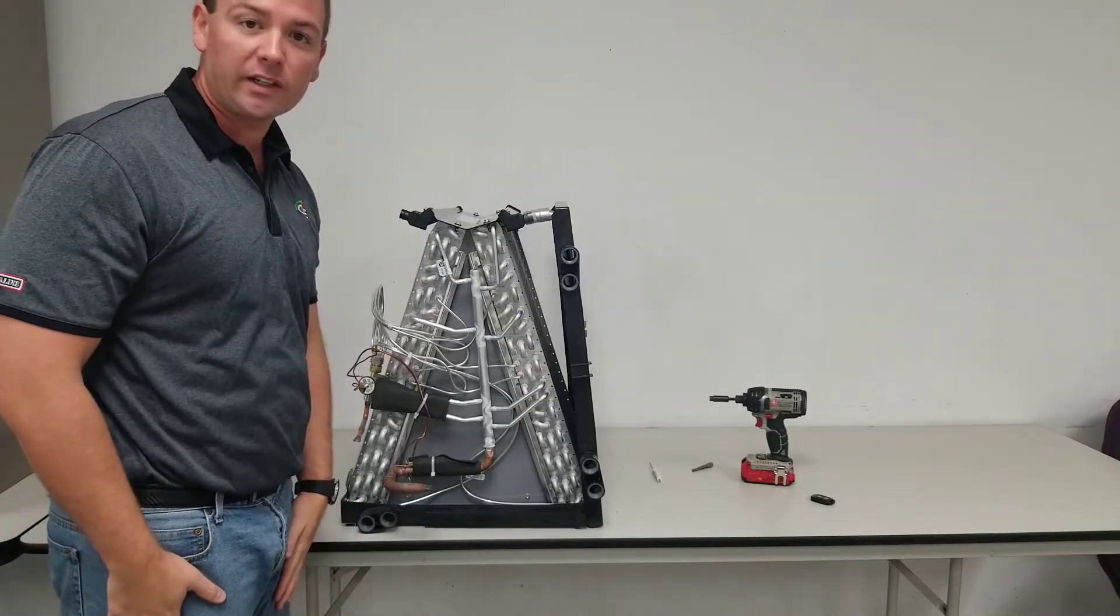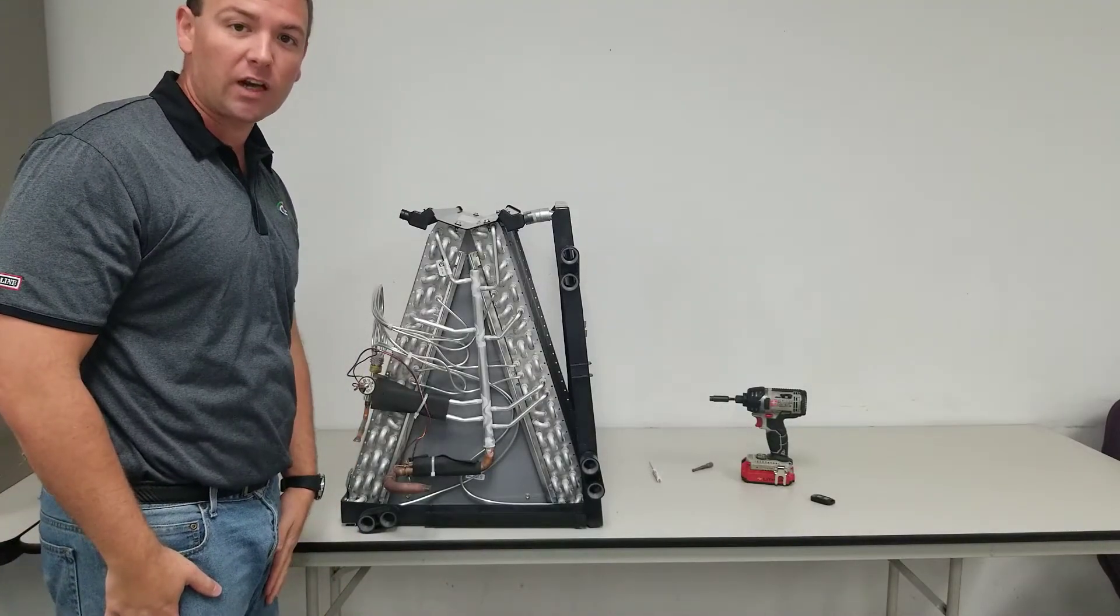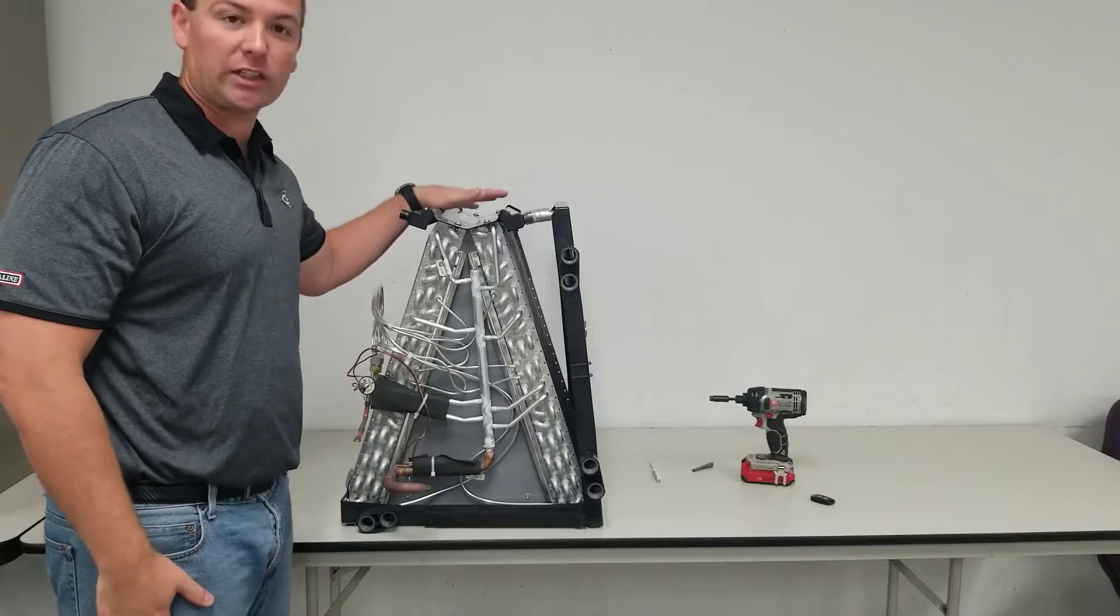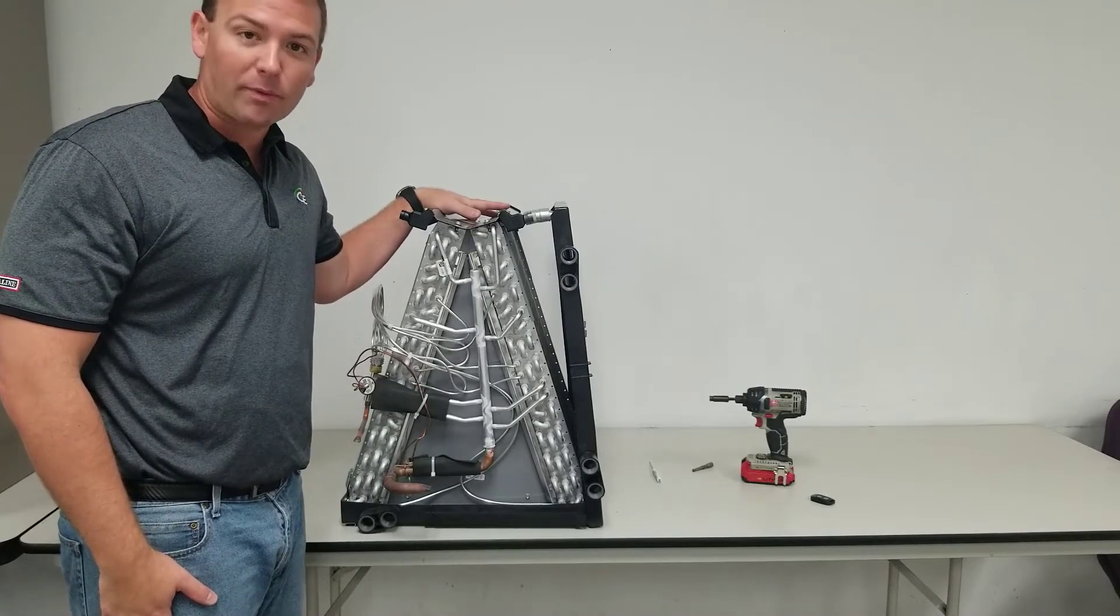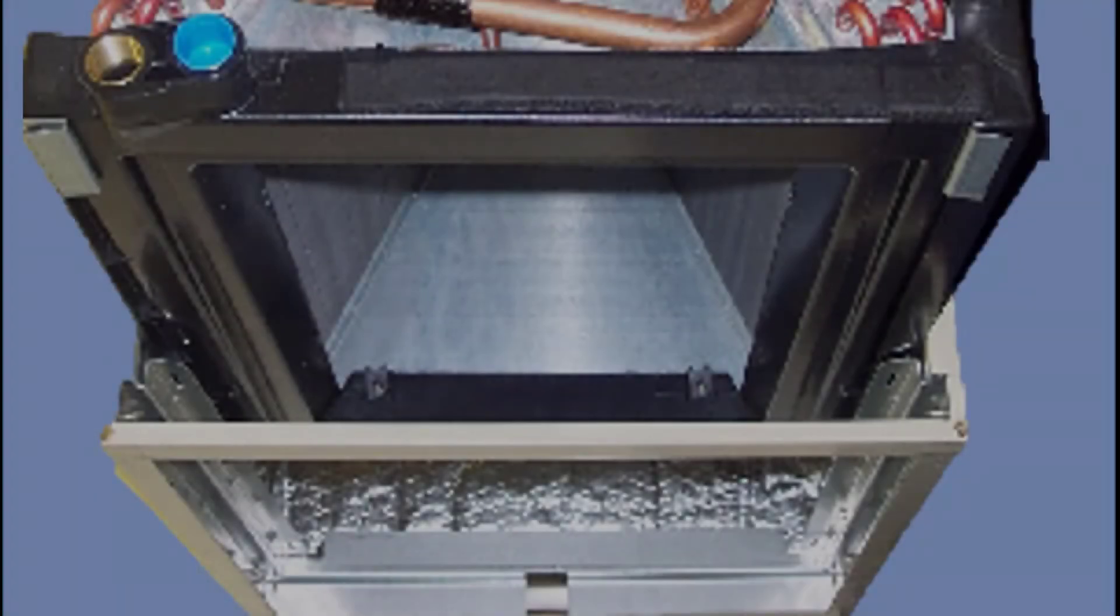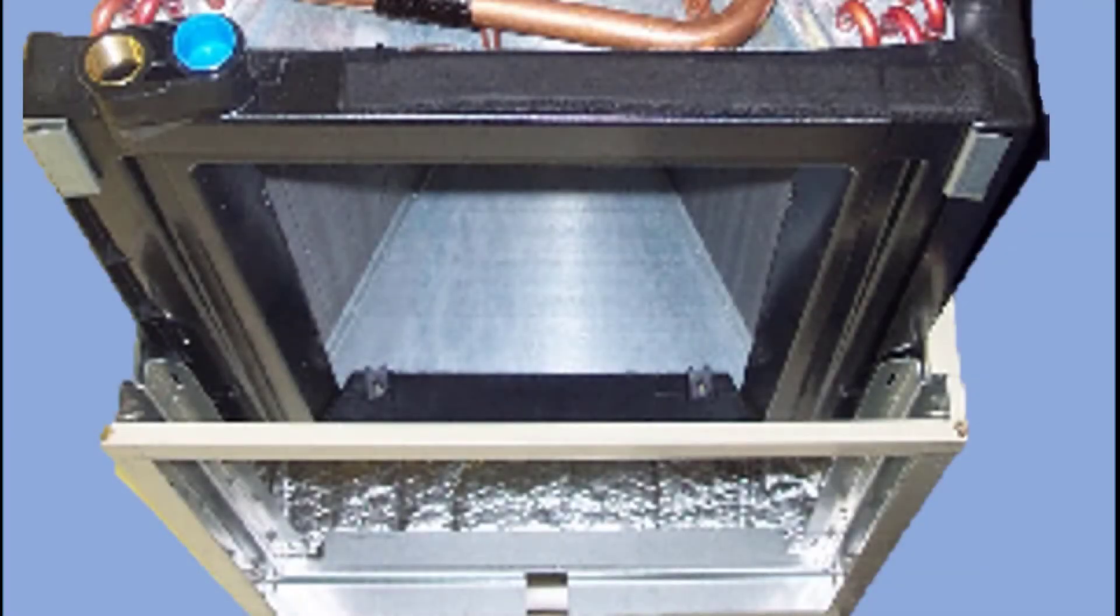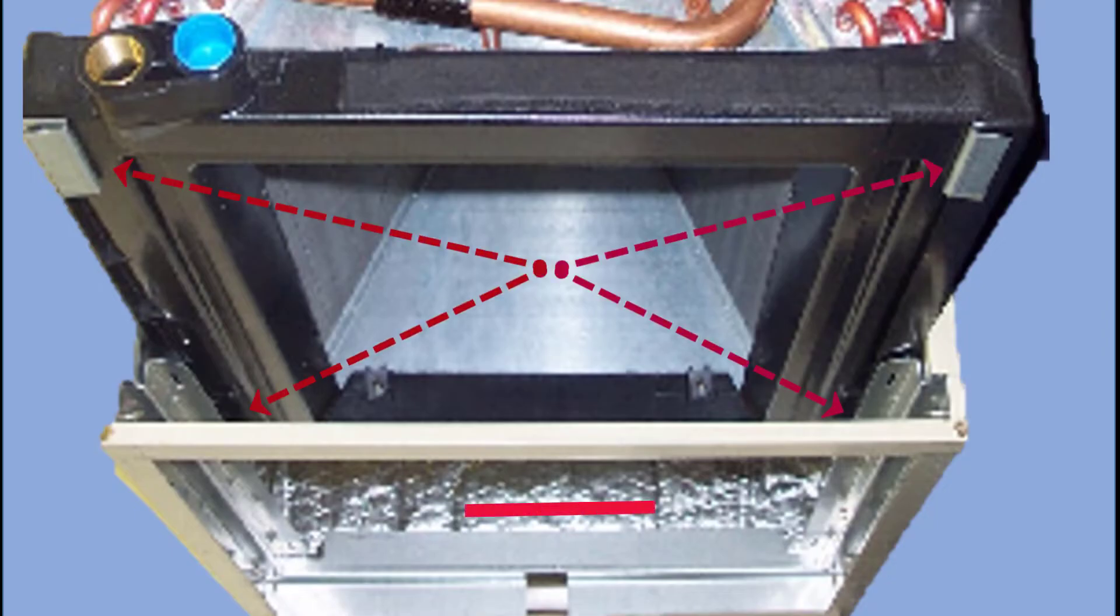You've just completed the right hand conversion of the coil. It can be reinstalled in the air handler and then installed in a horizontal right application. When you slide the coil assembly back into the fan coil, please make sure the four coil support brackets properly engage the coil support rails on the right and left side of the unit. This is a very important step, but even more important in a horizontal application.